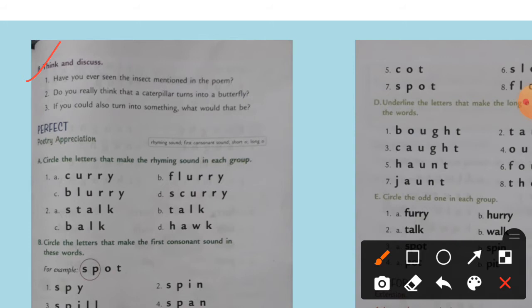Otherwise, you never seen. So you write, no, I have never seen the insect mentioned in the poem. Insect means caterpillar. You will write here yes, otherwise you write here no. Again I repeat, have you ever seen the insect mentioned in the poem? So you see, you write here yes, I have seen the insect mentioned in the poem.